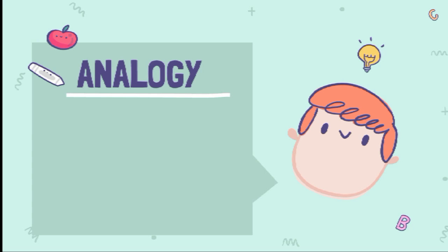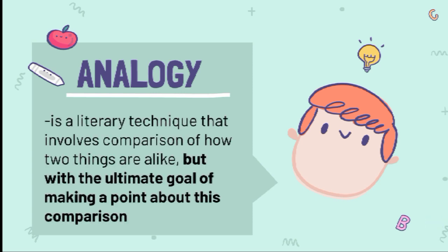What is an analogy? Comparing objects or ideas is a common practice, especially in writing. While there are many types of comparisons through usual figures of speech like simile and metaphor, there are also literary techniques that can show a more detailed comparison of things and ideas. One example is the use of analogy. An analogy is a literary technique that involves comparison of how two things are alike, with the ultimate goal of making a point about this comparison. Although often similar or related to simile and metaphor, an analogy is not a figure of speech — it is a rhetorical device used to make rational arguments and support ideas by showing connections between unlike things.